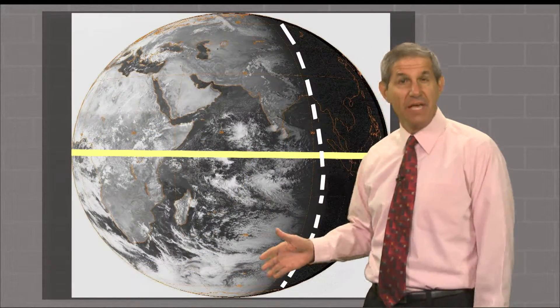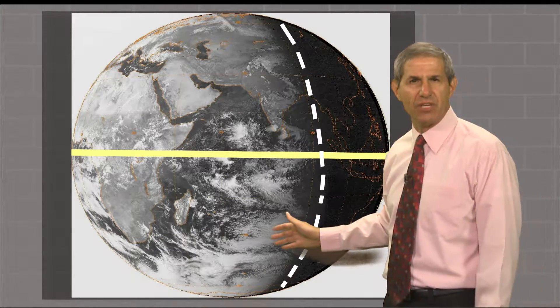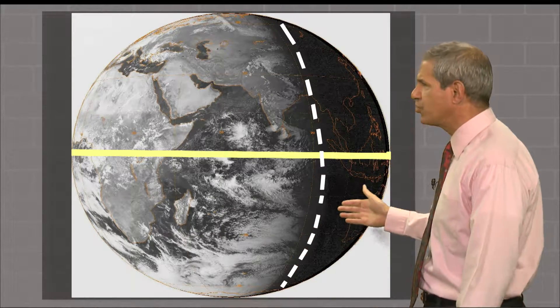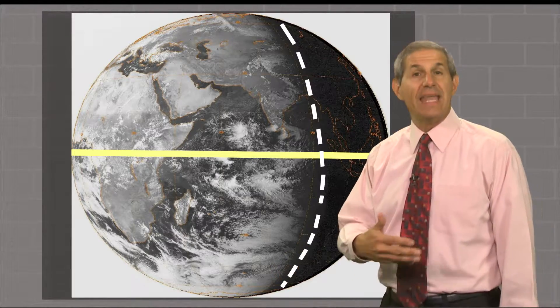To see how this looks from space, here's a satellite image from last Thursday. The yellow line is the equator. The dashed white line separates the day and night sides of the Earth. That's called the terminator. Notice it parallels the longitude lines running north to south, so each hemisphere is equally lit.